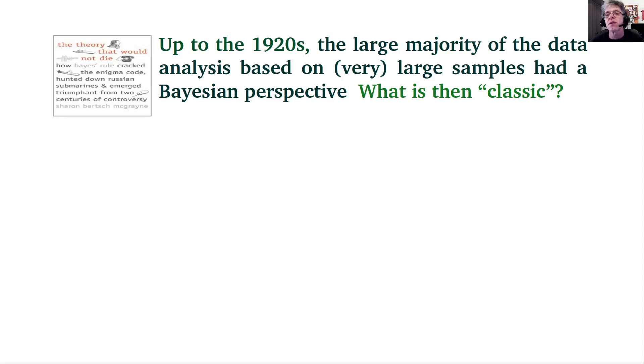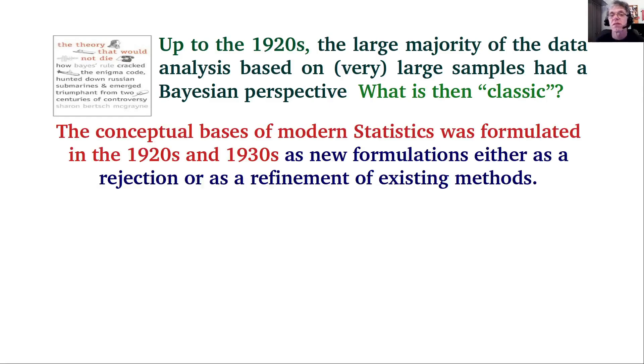Up to the 1920s, the overwhelming majority of data analysis, then based on extremely large sample sizes, had a Bayesian perspective. Every practicing statistician at the time, including Fisher, knew about what we now call Bayesian statistics, which raises the question of what is called classic. If classic is the oldest practice, we should call Bayesian statistics classic as opposed to calling frequentist statistics the classic statistics. The conceptual basis of modern statistics were formulated in the 1920s and 1930s, either as new formulations or as rejection or refinements of existing methods.